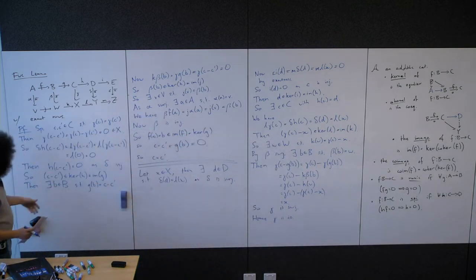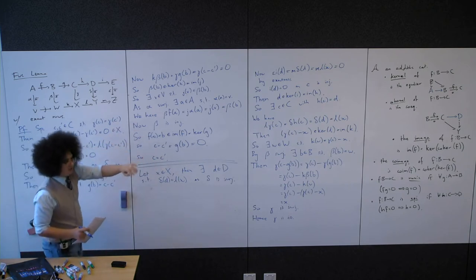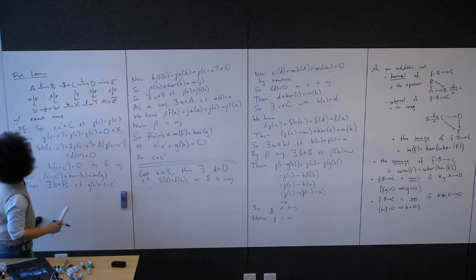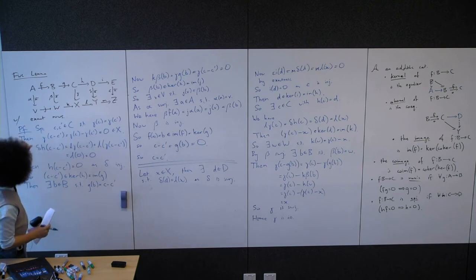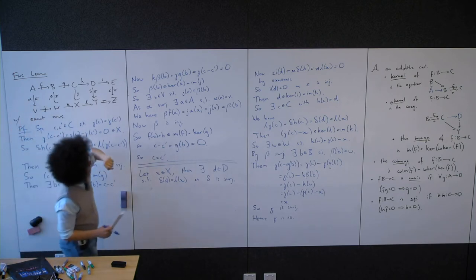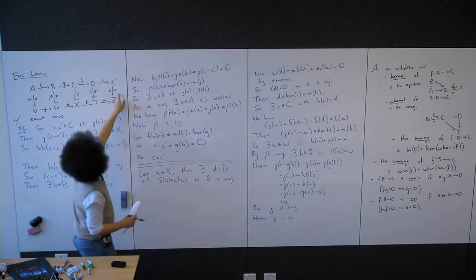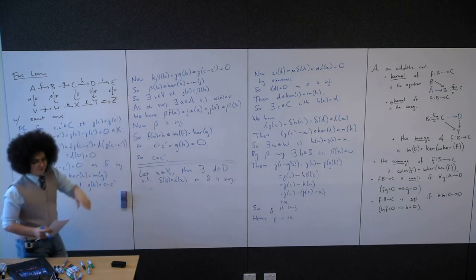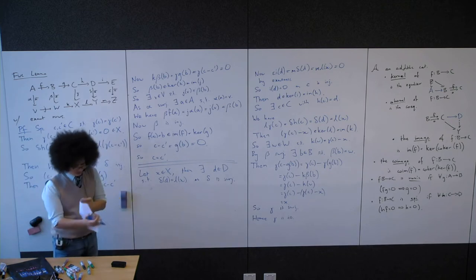If you look carefully at where we used injectivity and surjectivity in the proof, we needed both injectivity and surjectivity on beta and delta. But we only needed surjectivity on alpha, and we only needed injectivity on epsilon.